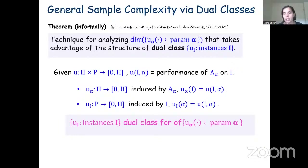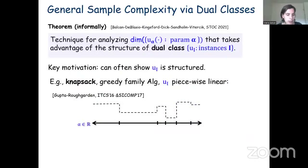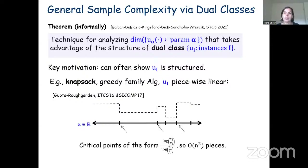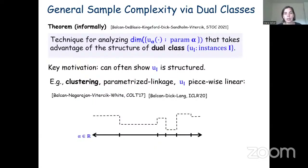Our key motivation is that in many cases we can show the class of dual functions u_i is structured. For example, for the knapsack problem with the family of greedy algorithms, these dual functions are piecewise linear with at most N² pieces, and the transition boundaries have a very specific form. Similarly, in papers from 2017 and 2020, we showed that for parametric families of linkage procedures for clustering problems, the dual functions are again piecewise linear.